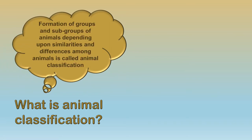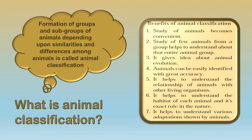What is animal classification? Formation of groups and subgroups of animals depending upon the similarities between them and the differences among them is called animal classification — that is, just putting animals into groups. The benefit of this is that the study of animals then becomes convenient.